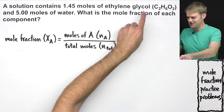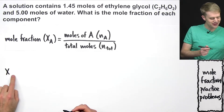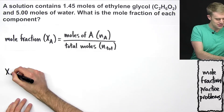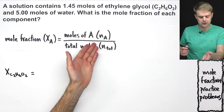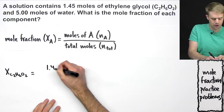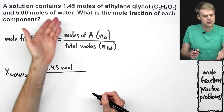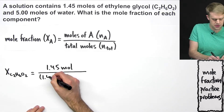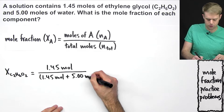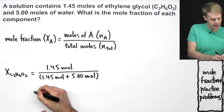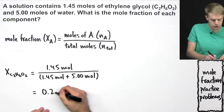Let's start by calculating the mole fraction of ethylene glycol. The symbol for mole fraction is X, and then we put the chemical formula in subscript. So for ethylene glycol, that is X_C2H6O2. We take the number of moles of ethylene glycol, which is 1.45 moles, and divide that by the total number of moles — so 1.45 moles plus 5.00 moles of water. When we do this division, we get 0.225.